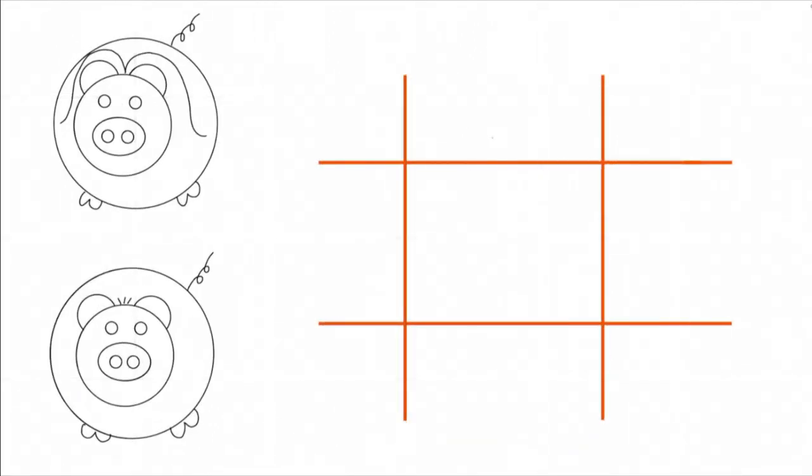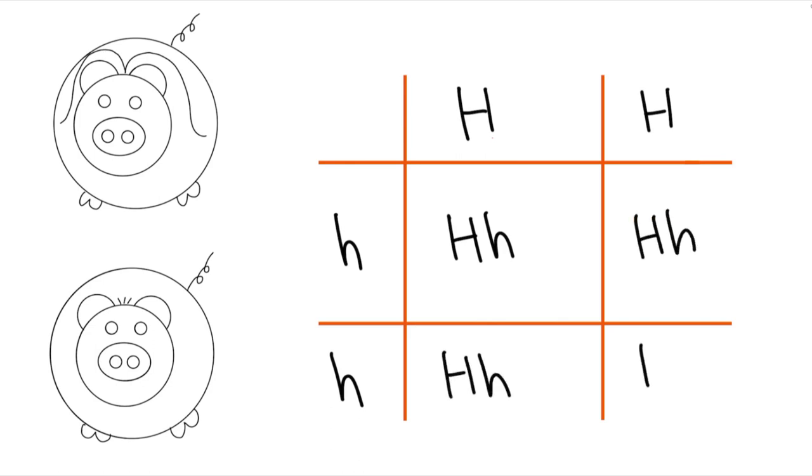Now we will move on to a new example. Let's say that there are two types of pigs. One is a mom with long hair and one is a dad with short hair. The short hair trait is dominant over the long hair trait, being represented with a capital H. The recessive long hair trait is represented with a lowercase letter h.